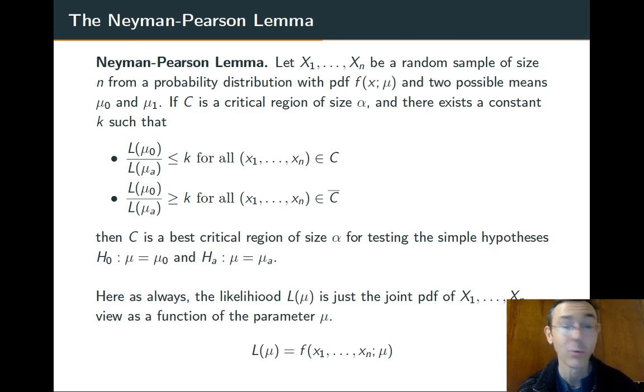If C is a critical region of size alpha and there exists a constant such that that likelihood ratio is less than or equal to that constant for points in C and greater than or equal to that constant for points out of C, then C is the best critical region of size alpha for testing the simple hypotheses H_0: μ = μ_0 against H_A: μ = μ_A.